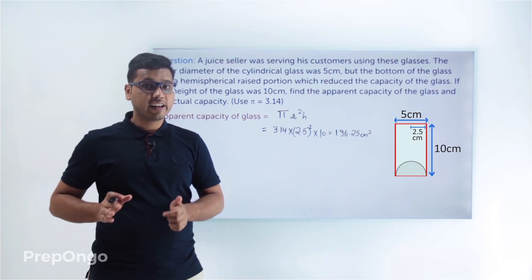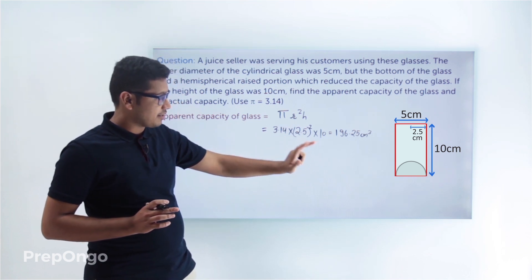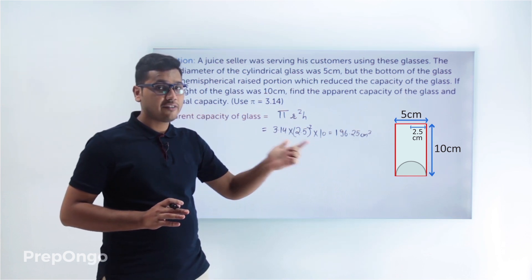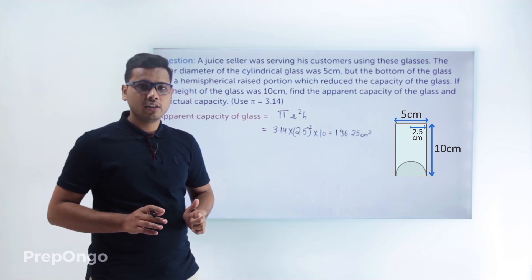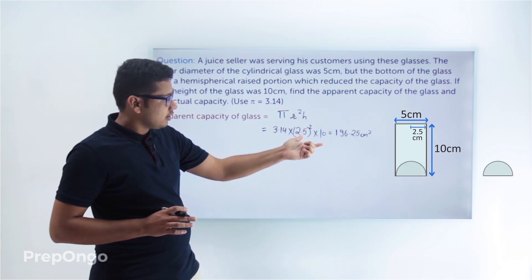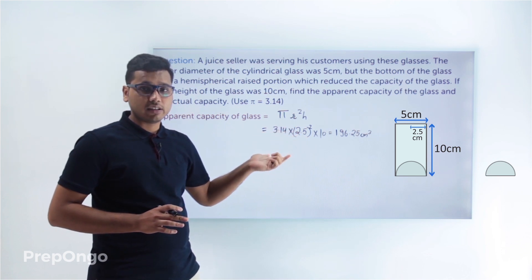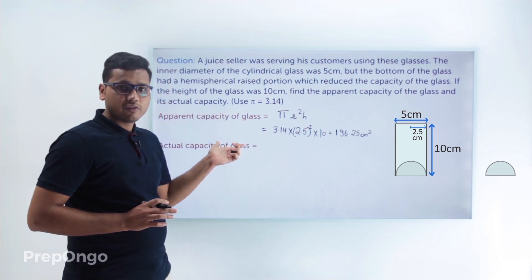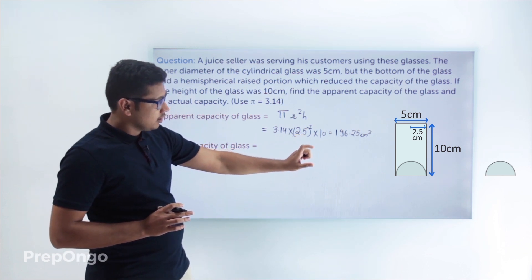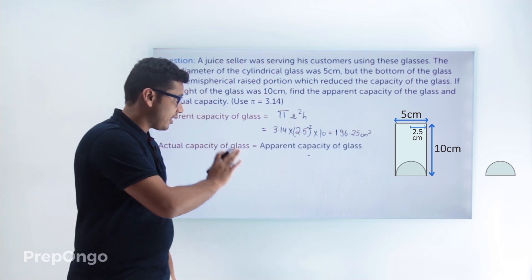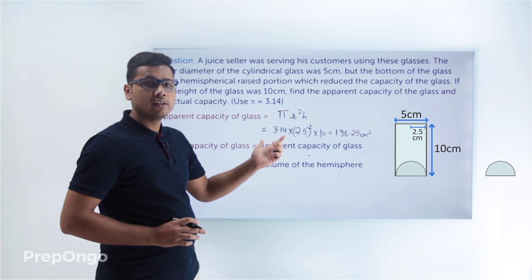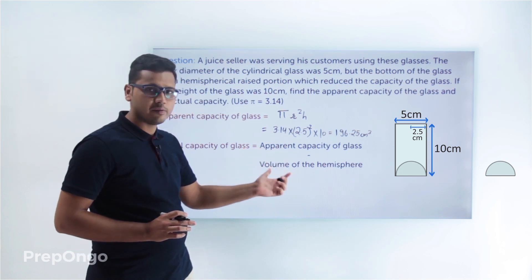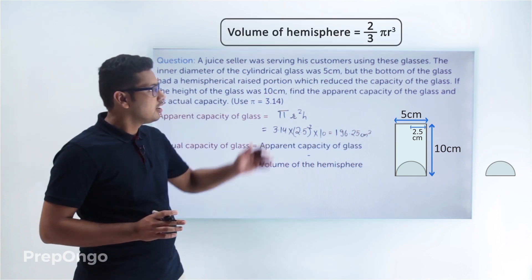But we are not actually getting this much juice, since there is a raised hemispherical portion inside the glass. So we will be getting slightly less than this amount. We calculate the actual capacity by subtracting the volume of the hemisphere from the apparent capacity. The volume of a hemisphere is (2/3)πr³.